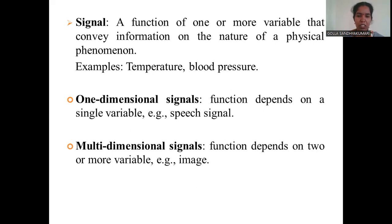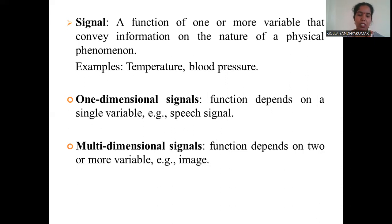A one-dimensional signal is one where a function depends on a single variable. If a function depends upon two or more variables, it is a multi-dimensional signal. An example of a one-dimensional signal is a speech signal, and an example of a multi-dimensional signal is an image.